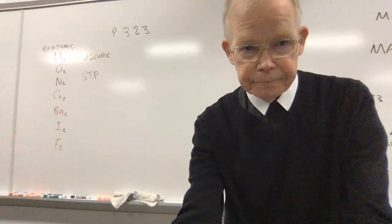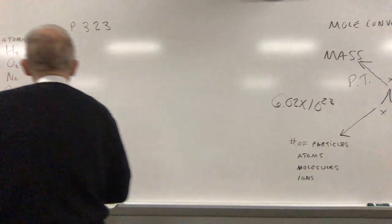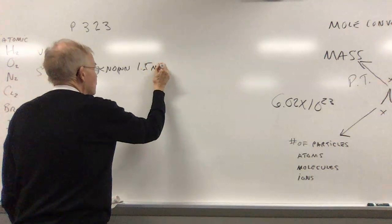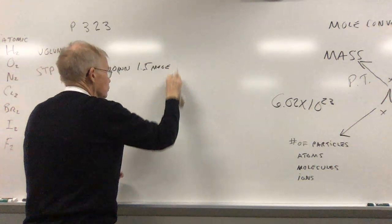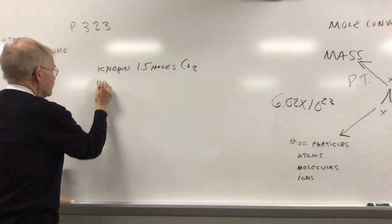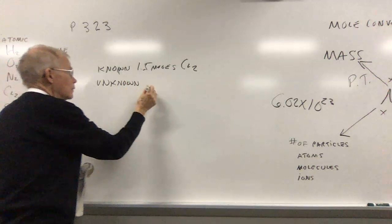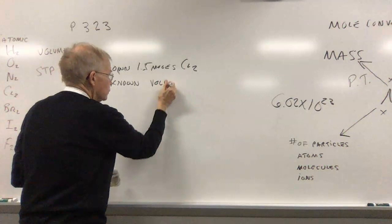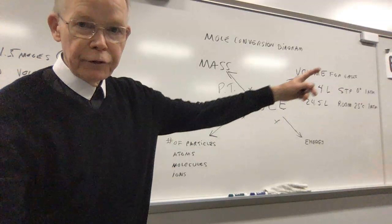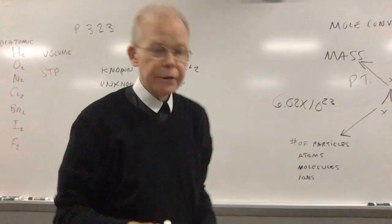So 1.5 moles of Cl2 gas or any gas is going to be what I know. This will be my mole quantity known: 1.5 moles of Cl2. And the unknown is what volume is that. Again refer to my diagram, I'm going to go from mole out to volume, so I'm going to be going in that direction. I'll multiply. And let me set that up for you.